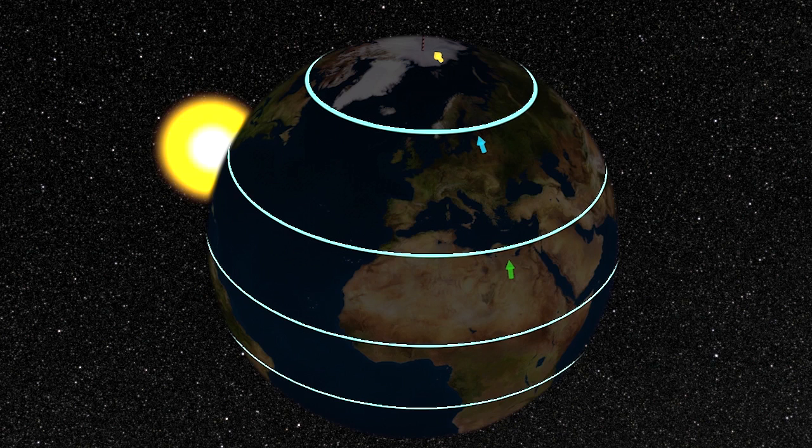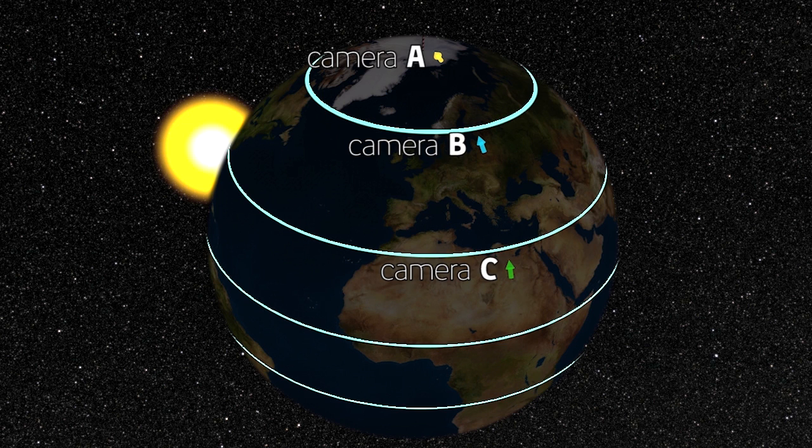Those arrows you can see there represent three cameras which are all facing north at this point and are basically flat to the ground.